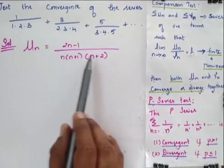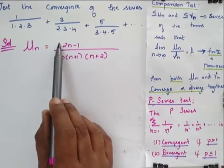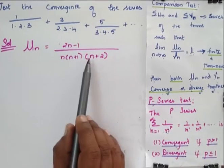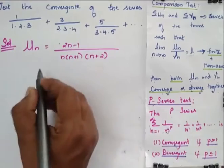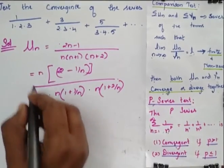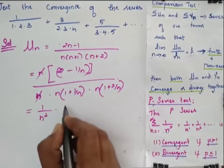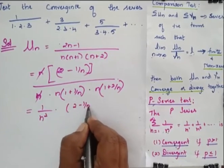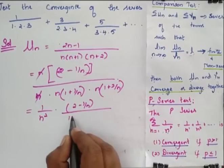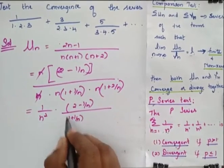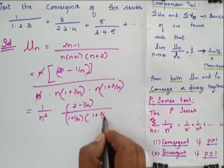Now I am going to simplify this. I am going to take n here commonly outside, this n commonly outside and this n commonly outside. So when I simplify, I can cancel this n and this n and I will get 1 by n square into 2 minus 1 by n divided by 1 plus 1 by n into 1 plus 2 by n.